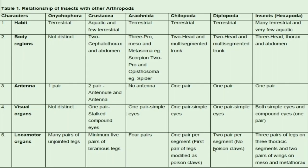In this table we observe the relationship of insects with other arthropod classes. Regarding habitat: Onycophora, Arachnida, Chilopoda, and Diplopoda are terrestrial. Crustaceans are aquatic and also terrestrial. Insects are mostly terrestrial and very few are aquatic.